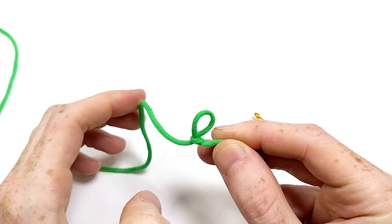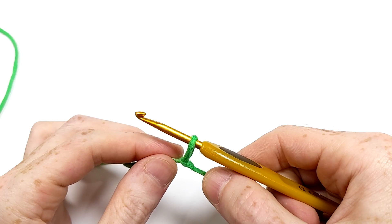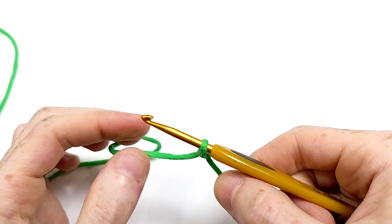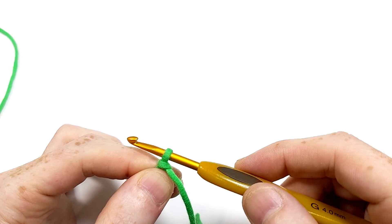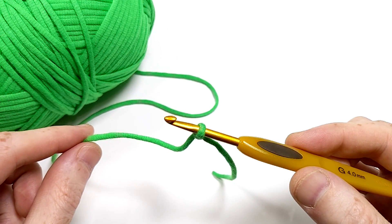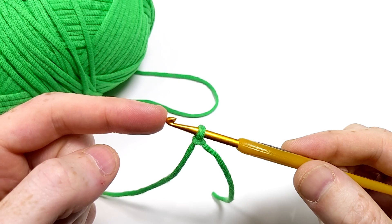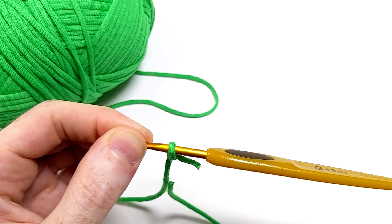Back to the slipknot, now we can insert the hook and pull the string until the loop is snug around the hook, but not too tight. It should be loose enough to easily slide on the hook, and try to keep it that way all the time. What we have now is the long end attached to the ball of yarn, the hook in a slipknot, and the short end or tail, which won't be used anymore, so you can cut that off if you want.